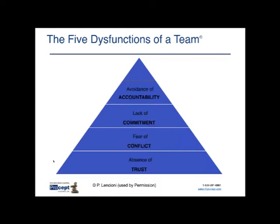The fourth dysfunction is avoidance of accountability, which follows naturally from lack of commitment. You can start to see how these build one on top of the other — it's the natural progression of a dysfunctional team. You may not immediately notice a lack of trust, but when you see that team members are avoiding accountability for delivering on project or team deliverables, you should recognize that there's probably a problem further down: a lack of commitment, a fear of conflict, or most commonly, an absence of trust.